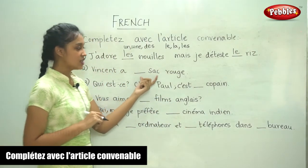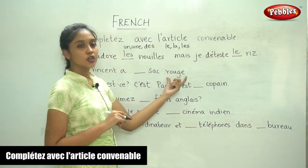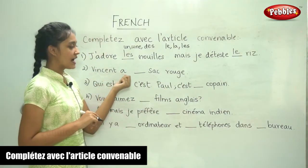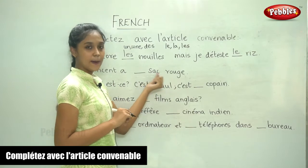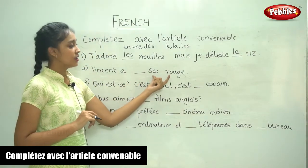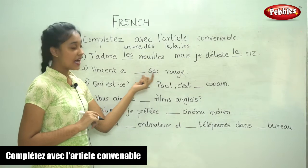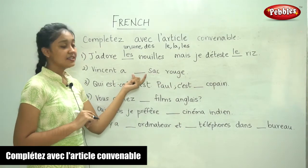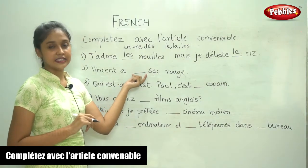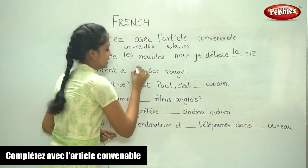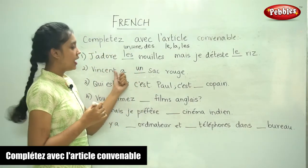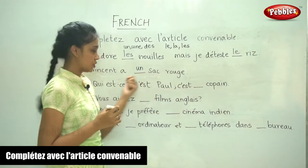Moving on to the next sentence: 'Vincent a dash sac rouge.' So Vincent has a dash red bag. Here it is masculine, and we need to fill in the indefinite article, so it is 'un'. 'Vincent a un sac rouge.'